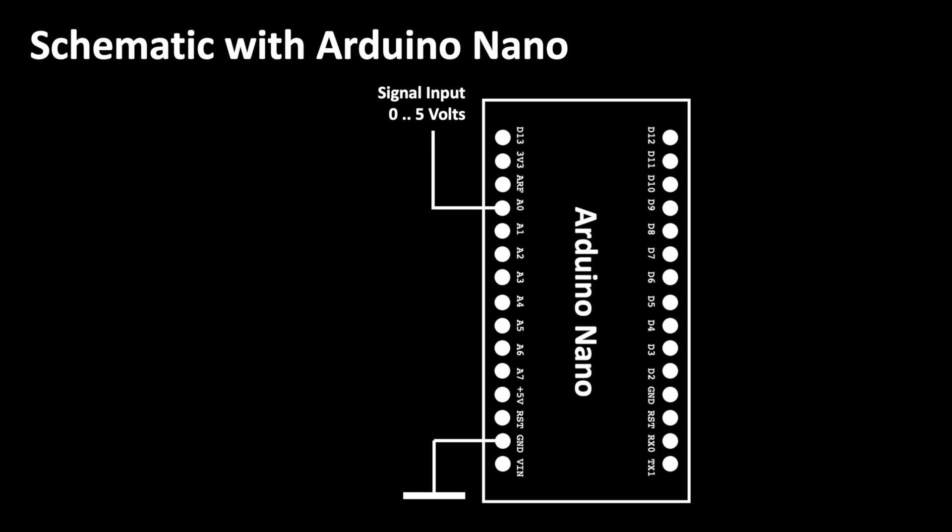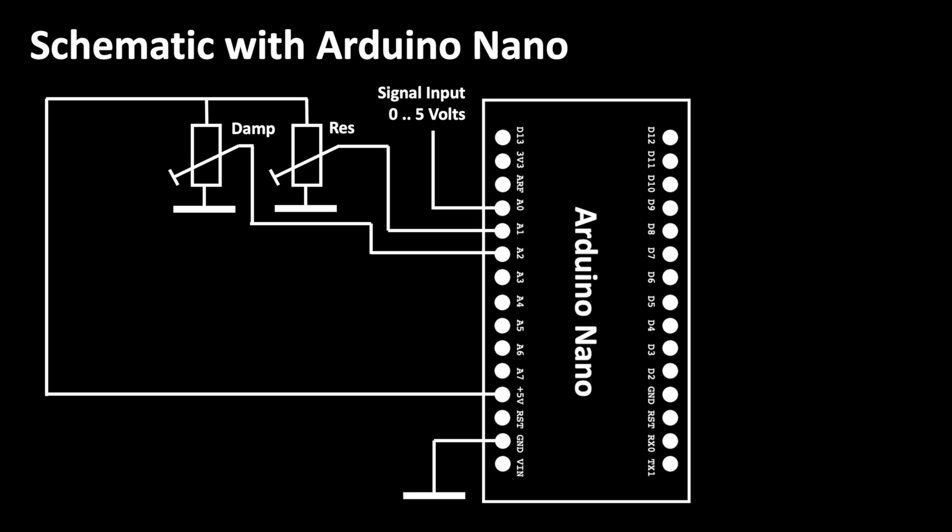In our concept we have defined that we want to adjust the resonance frequency and the damping of our digital filter with potentiometers. Therefore we connect two trimmers as a variable voltage divider and we feed the voltages to the inputs A1 and A2.